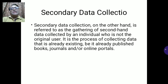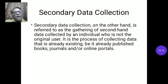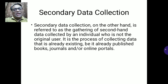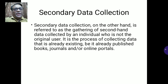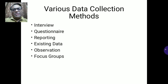The next type is secondary data collection. In secondary data collection, second-hand information is collected — existing data already available, or data published in journals, from which we collect data and do research work. There are six basic methods which are the most used, in addition to other methods.